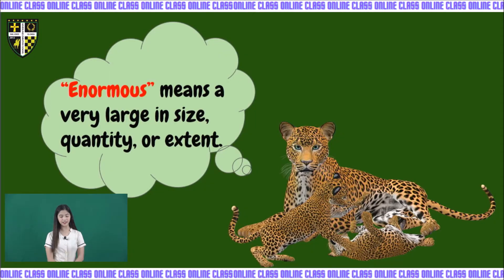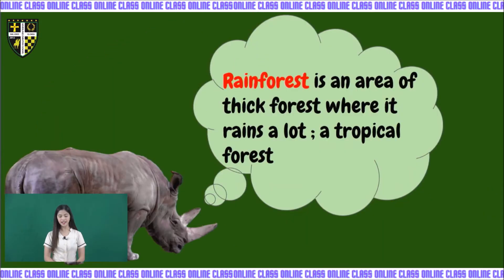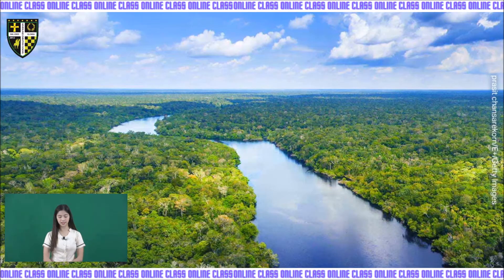Next word is the word enormous. The word enormous means very large in size, quantity, or extent. Enormous is also known as huge or big. The next word is rainforest. A rainforest is an area of thick forest where it rains a lot — a tropical forest. This picture is an example of a rainforest.